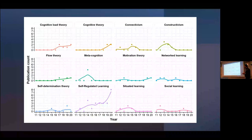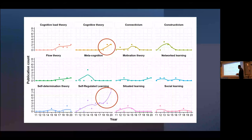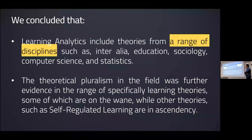We looked at what theories have been used across the years — the X axis is years and the Y axis is number of studies. We found that self-regulated learning is really the most prominent and has become more popular over time. You can see some theories that appeared in the early stages of the field and then just disappeared — like connectivism, networked learning, and self-determination theory popping up and fading. We concluded that learning analytics includes theories from a range of disciplines, and self-regulated learning is the main theory that has been used.